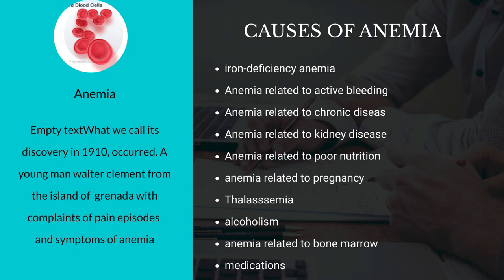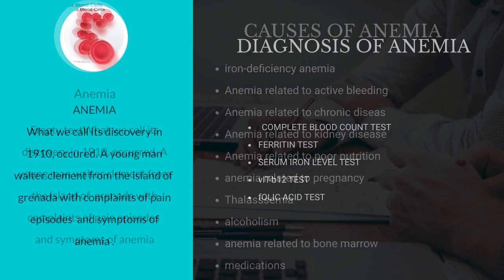Number 6, anemia related to pregnancy. Number 7, thalassemia. Number 8, alcoholism. Alcoholism leads to the deprivation of important vitamins and minerals because these are excreted via urine. Number 9, anemia related to bone marrow. Number 10, anemia related to medications. Some medications can also lead to anemia, such as the antibiotic chloramphenicol, penicillin, some HIV medications, and some antifungal drugs.